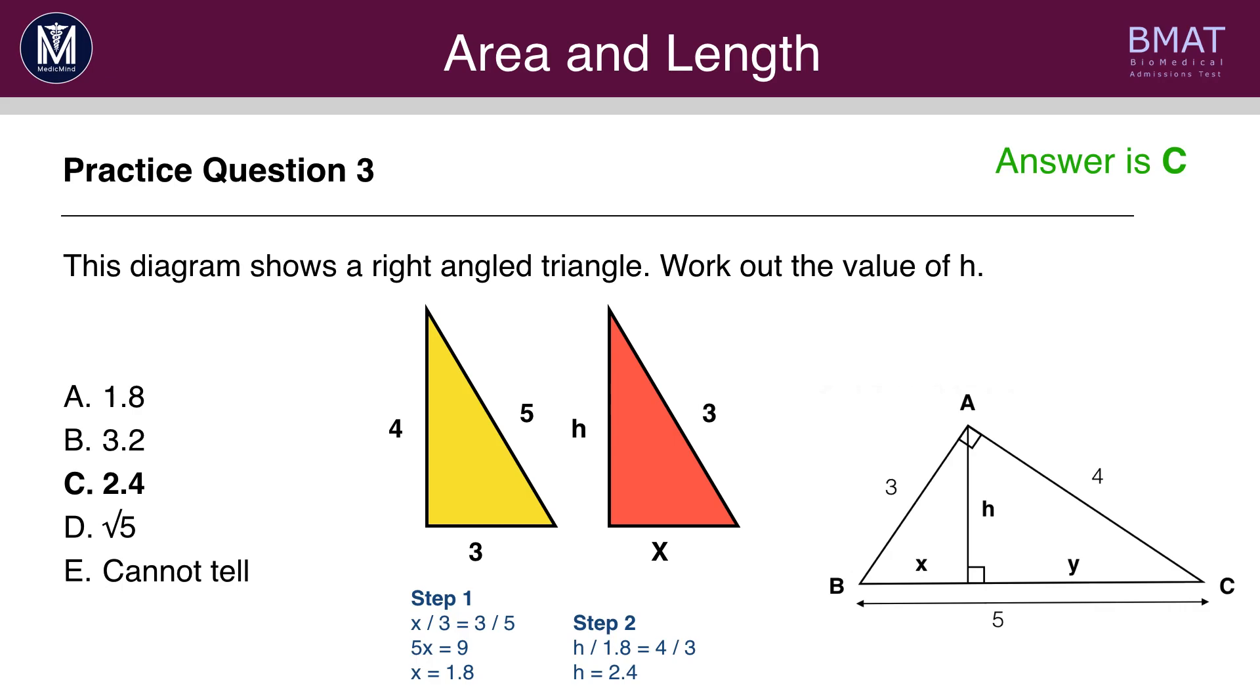Now, we can substitute in 1.8 where it says x, and now, make another equation involving h, because we want to work out h. h divided by x, or now 1.8, is equal to 4 over 3. Multiply both sides by 1.8, and you get h = 2.4, which is C.